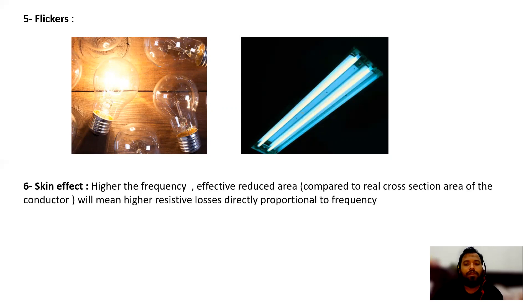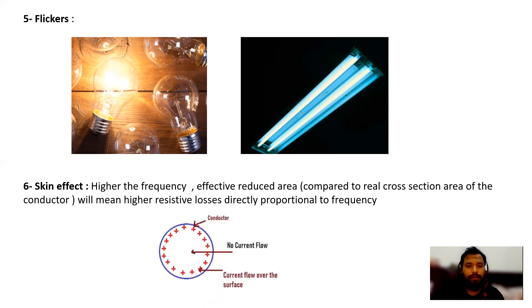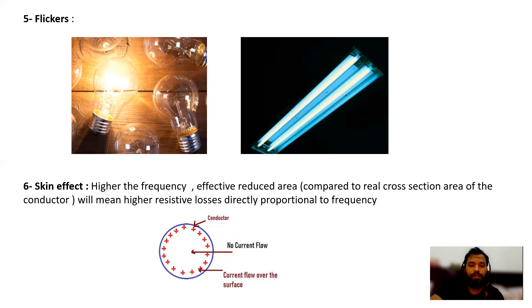The next effect is the skin effect. At higher frequencies the effective cross-sectional area of a conductor is reduced — current only flows on the outer surface of the conductor. Due to this, the maximum conductor utilization is reduced. This skin effect occurs because of higher frequencies caused by harmonics.